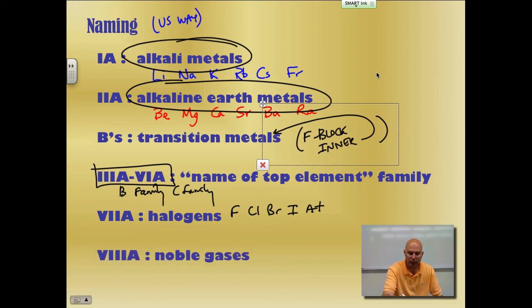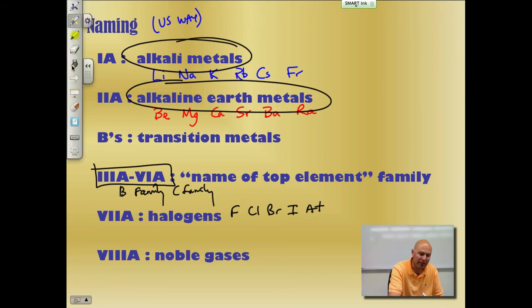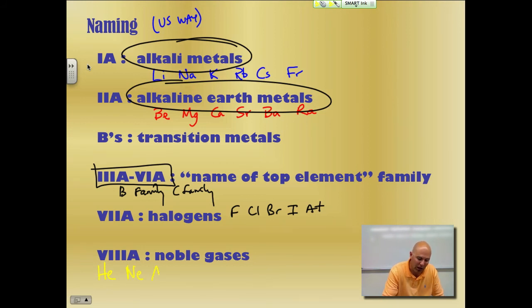noble gases. Noble gases are the furthest to the right. And of course, the noble gases are your elements like helium, neon, argon, krypton, xenon, and radon. Okay? So those are the names of the way that we name the families.